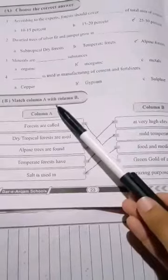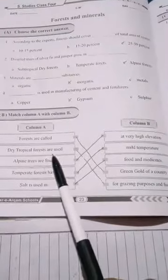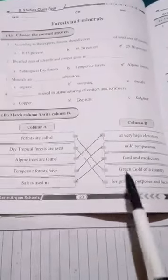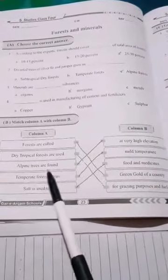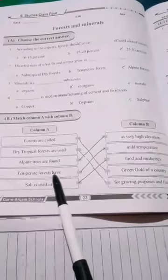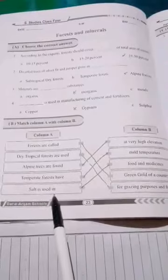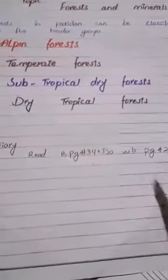Question B: match column A with column B. Forests are called green gold of a country. Dry Tropical Forests are used for grazing purpose and fueling. Alpine trees are found at very high elevation. Temperate forests have mild temperature. Salt is used in food and medicine. For homework, read book page number 34 and do workbook page 23.